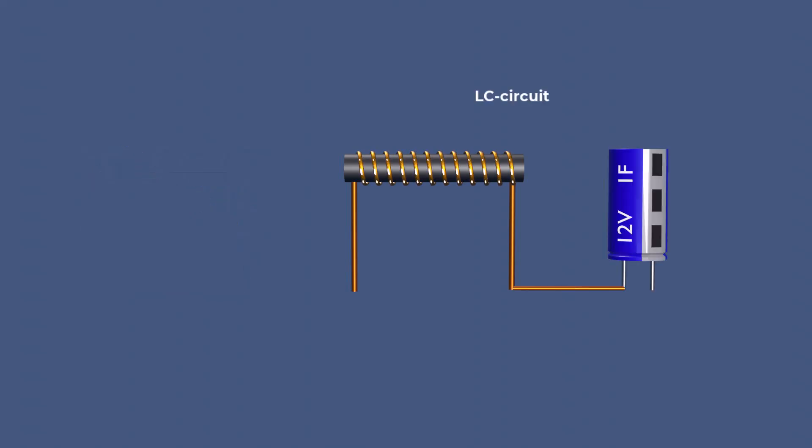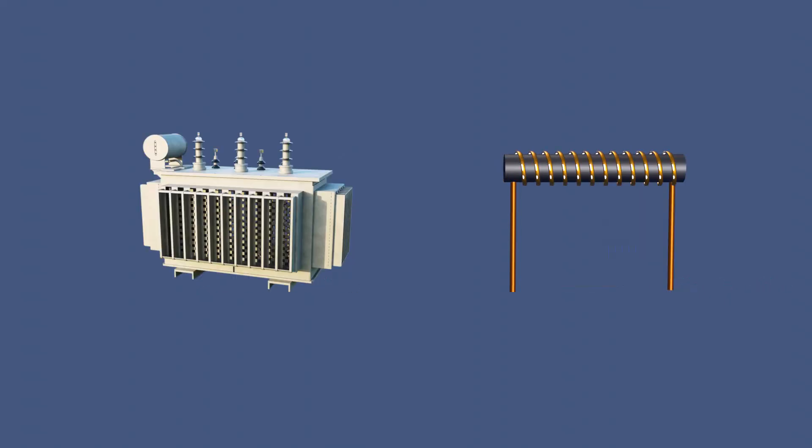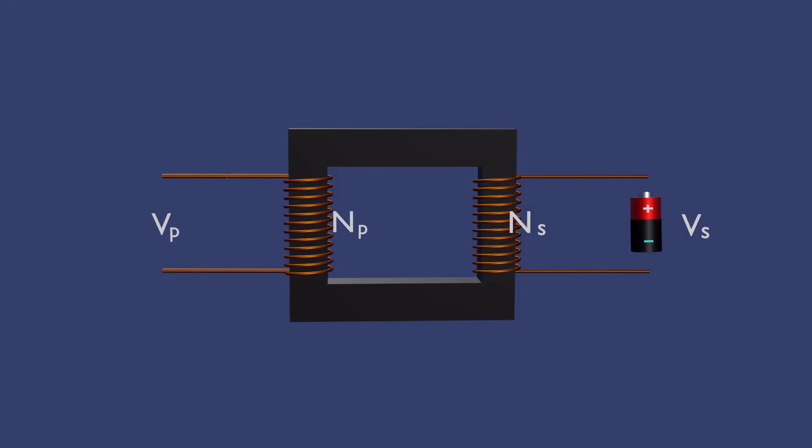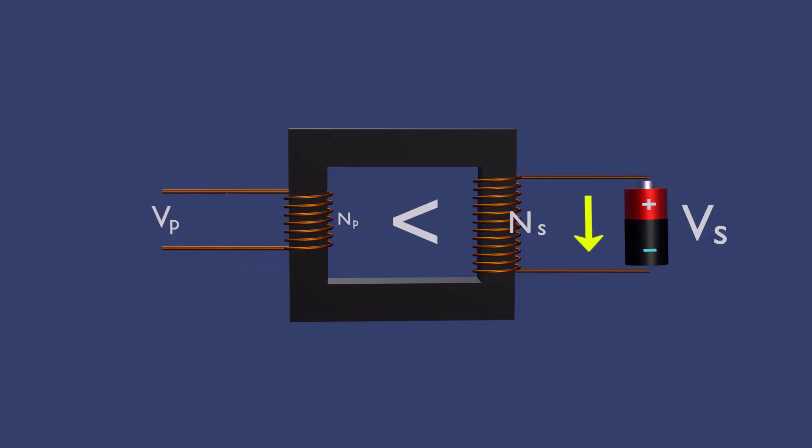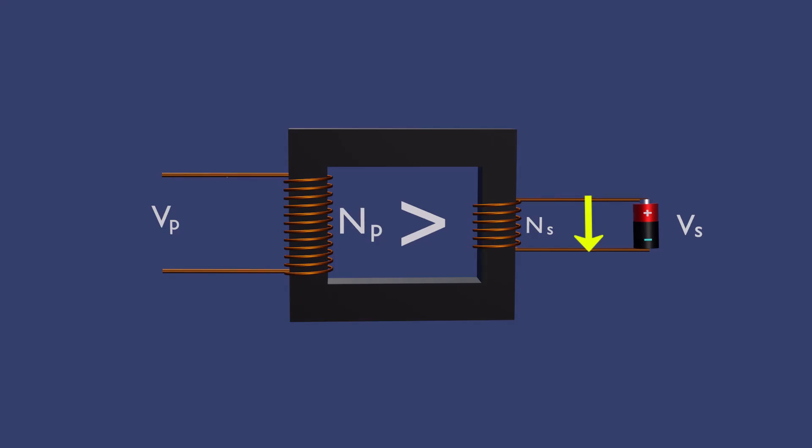In radio and communication devices, inductors are used in LC circuits to filter specific frequencies. In power transmission, inductors are an integral part of transformers, which are used to step up or step down voltage levels across the power grids.